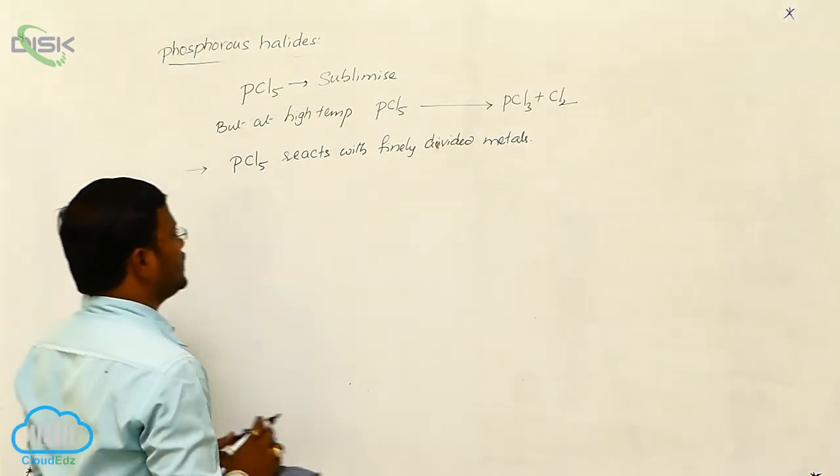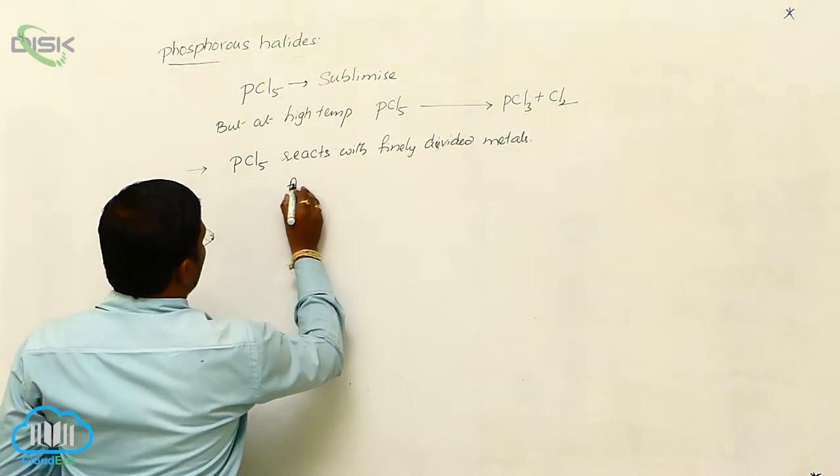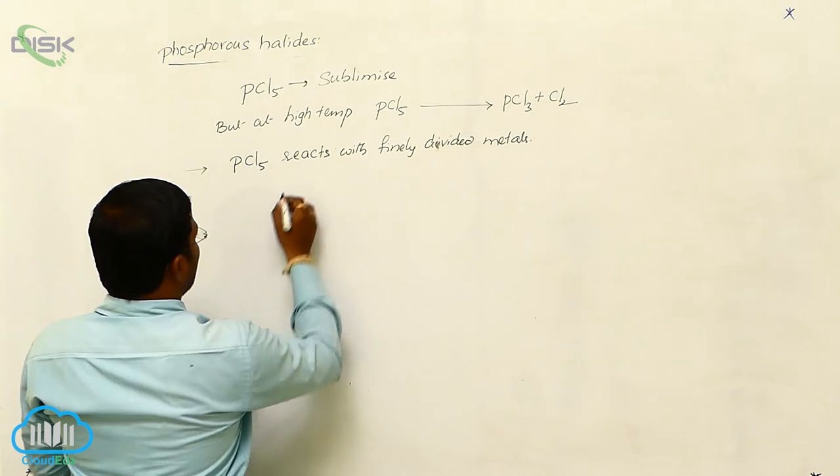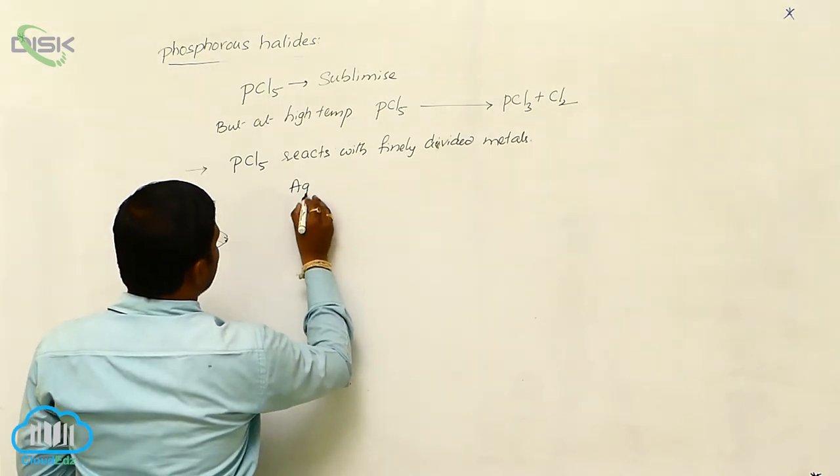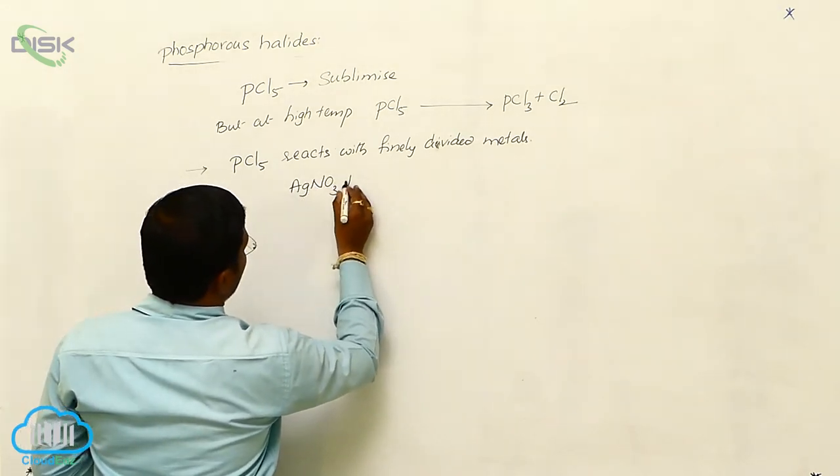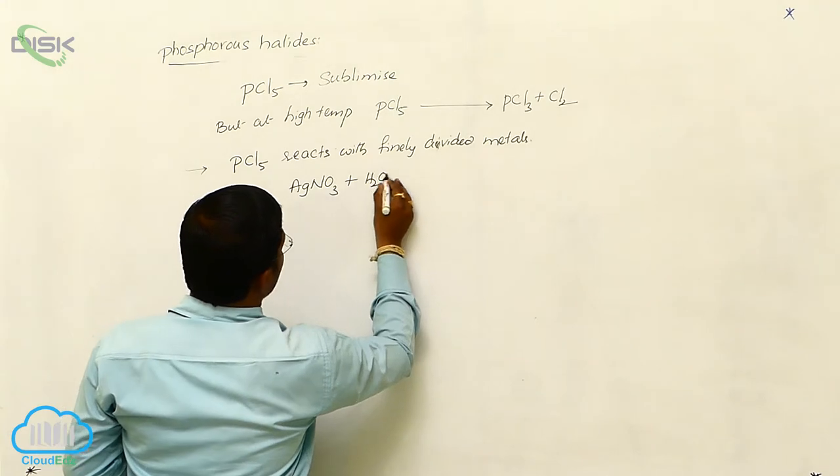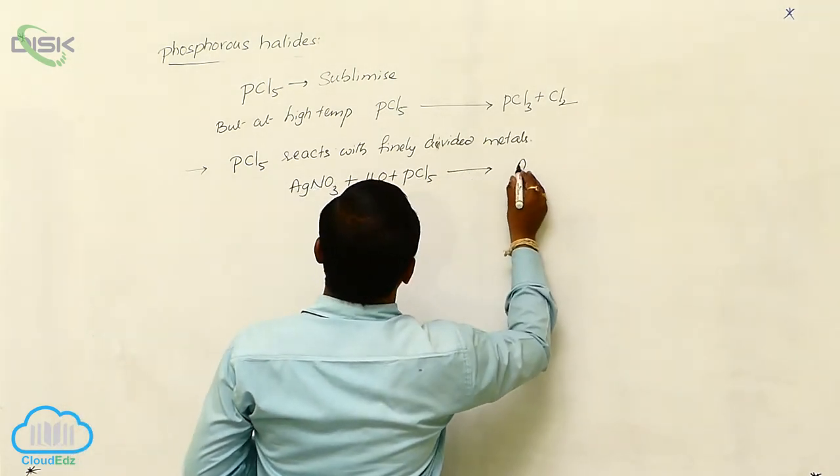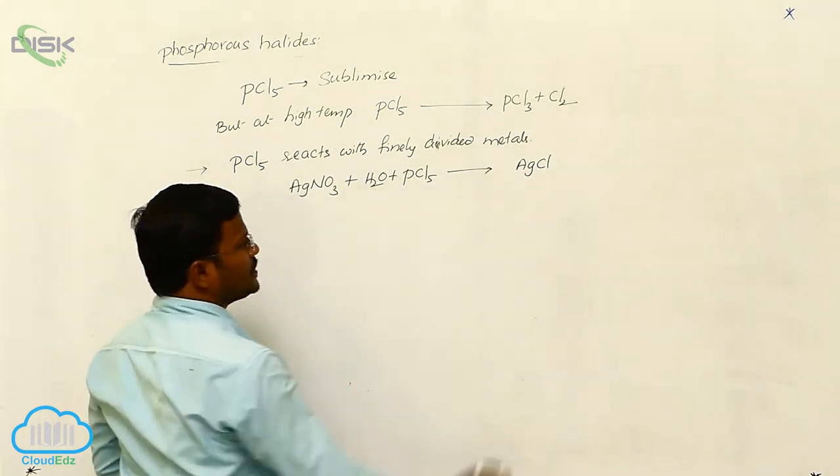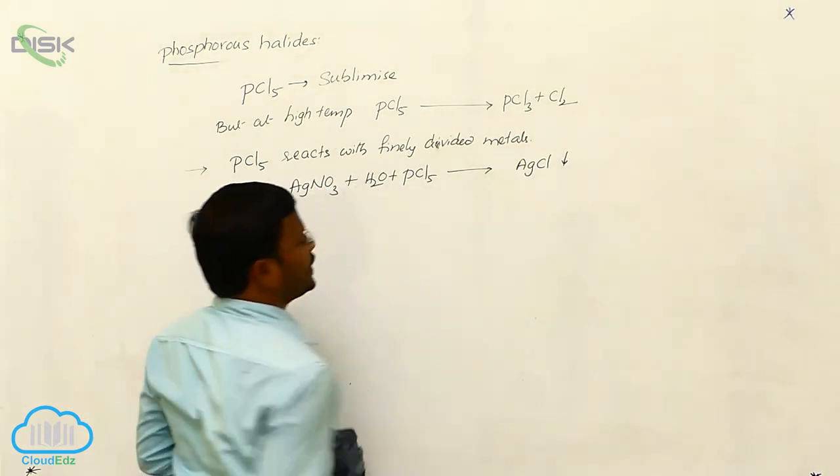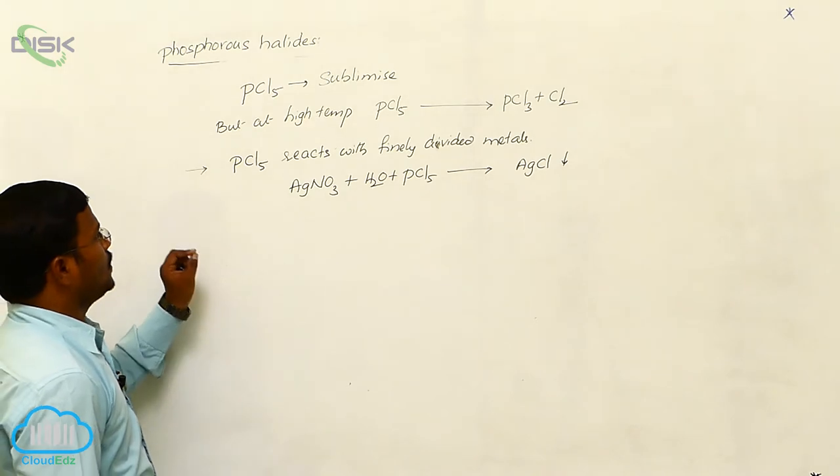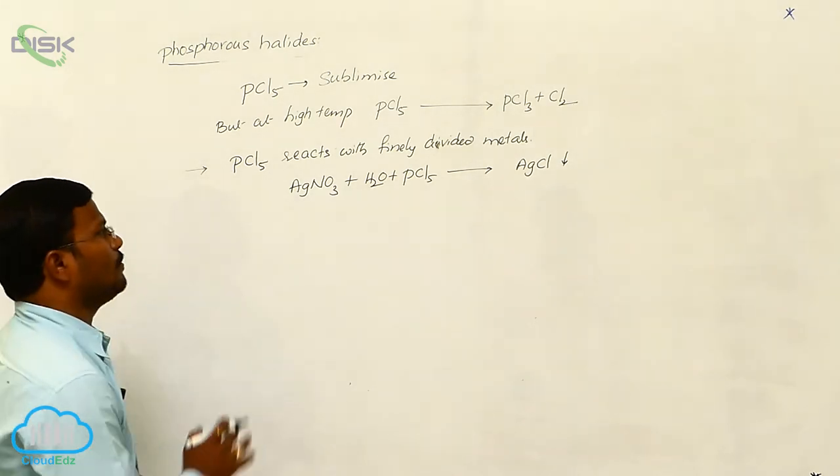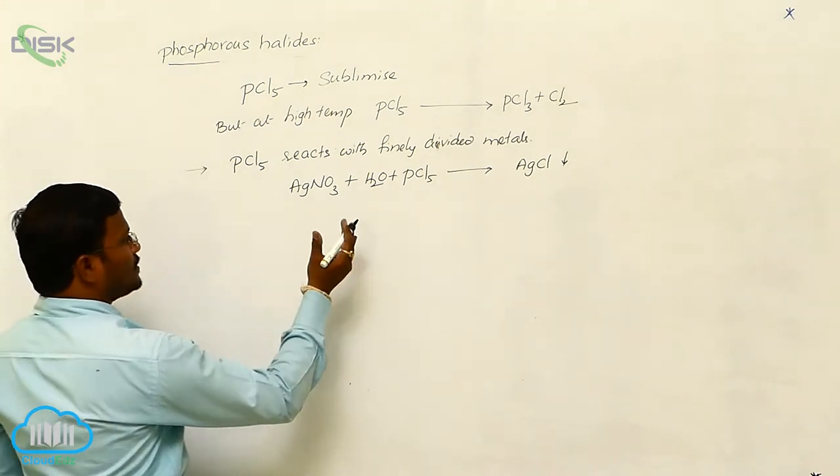For example, PCl5 in aqueous condition reacts with silver nitrate and converts it into silver chloride, which is a white color precipitate. This is the reaction of phosphorus pentachloride with metals or metal substances.